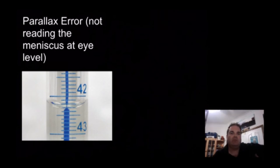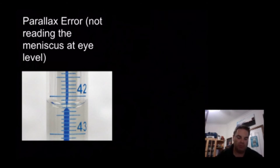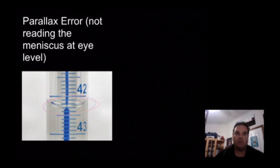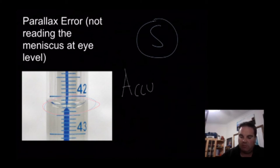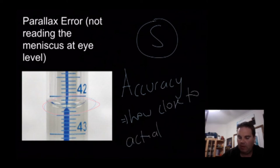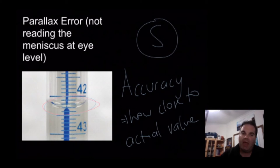Another one is parallax error, or not reading the meniscus at eye level. This can come about through the bending of light, making the bottom of the meniscus appear differently, with some reflection occurring as well. This is an example of a systematic error, because it's going to affect your reading of the meniscus every time. Systematic errors actually affect your accuracy - how close you are to the actual value. With parallax errors, it affects your meniscus readings, but because it affects both the beginning and end readings, it probably cancels itself out. Still, it's an example of a systematic error which can sometimes affect your accuracy.